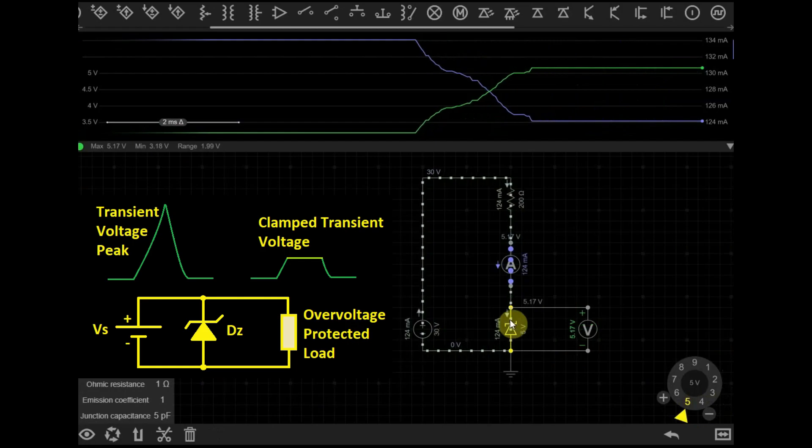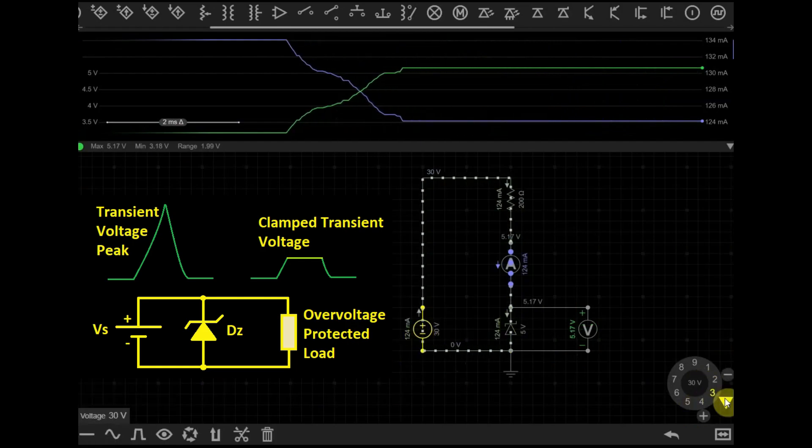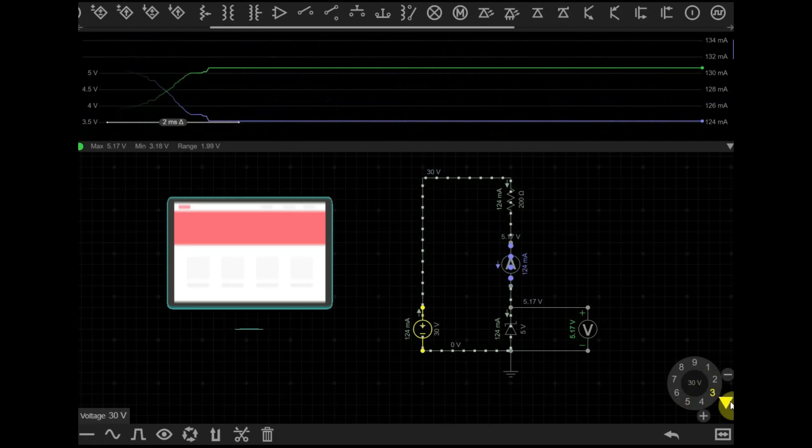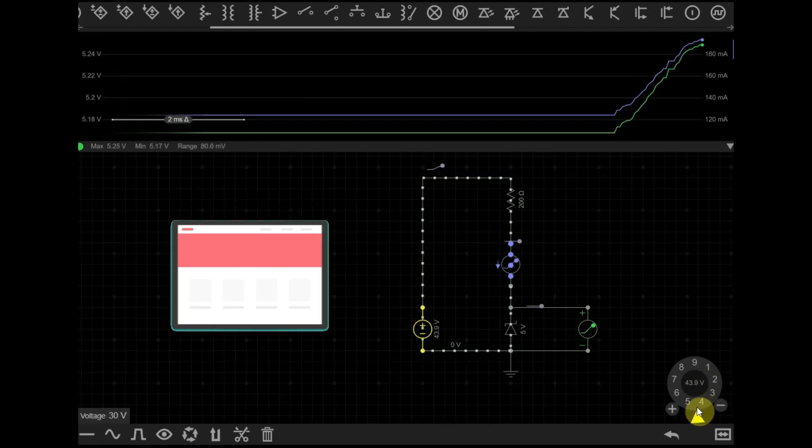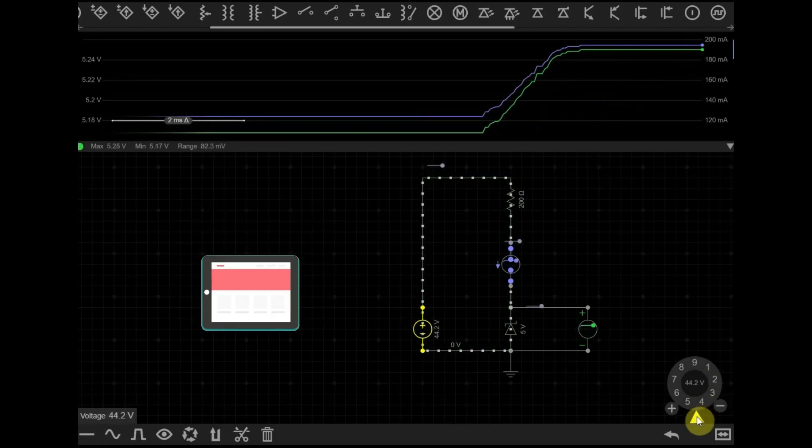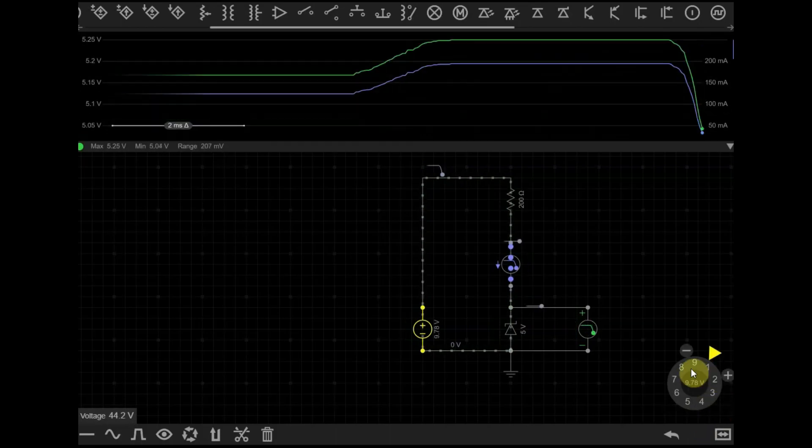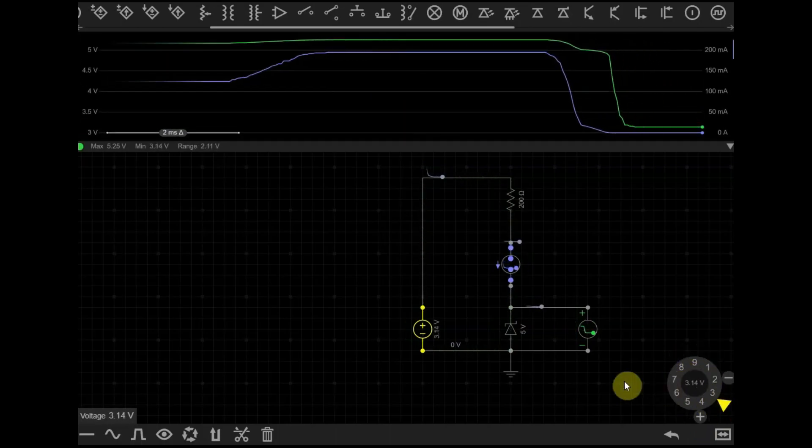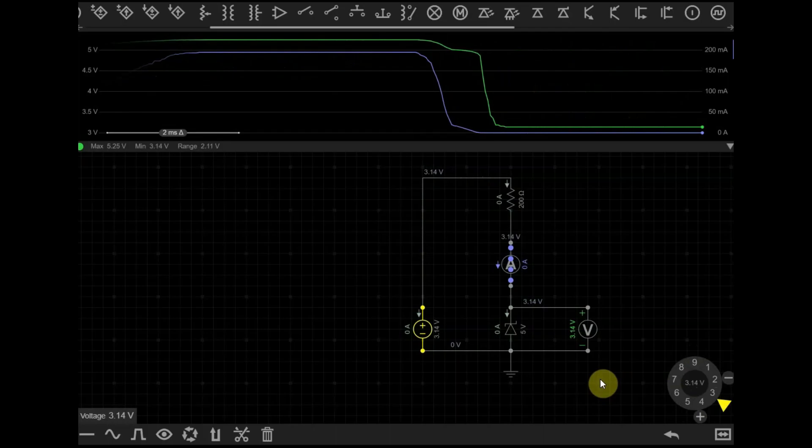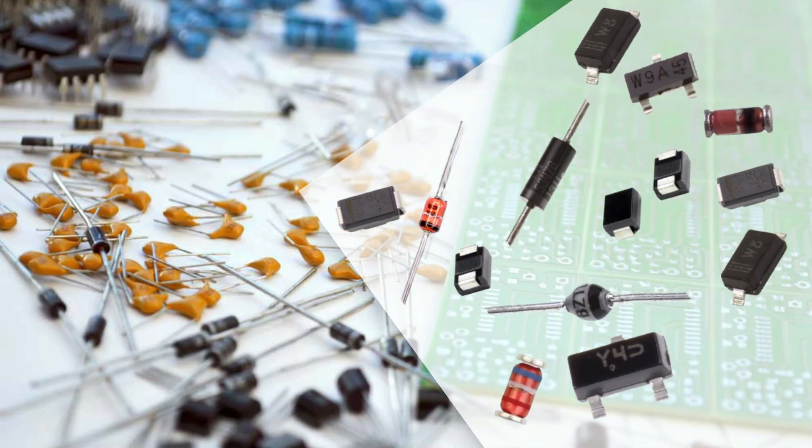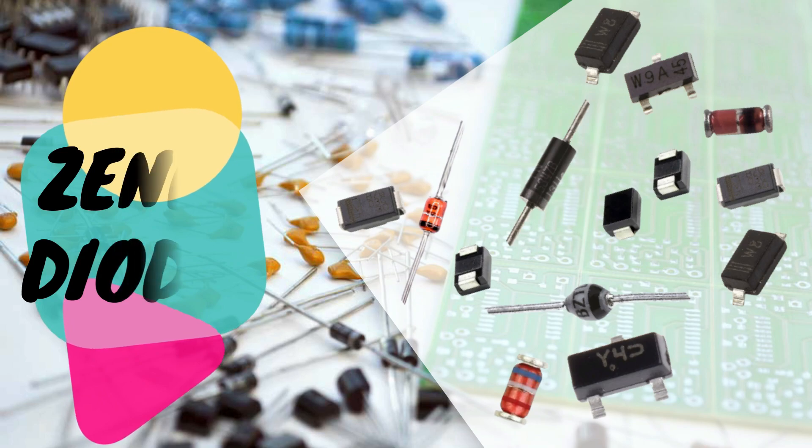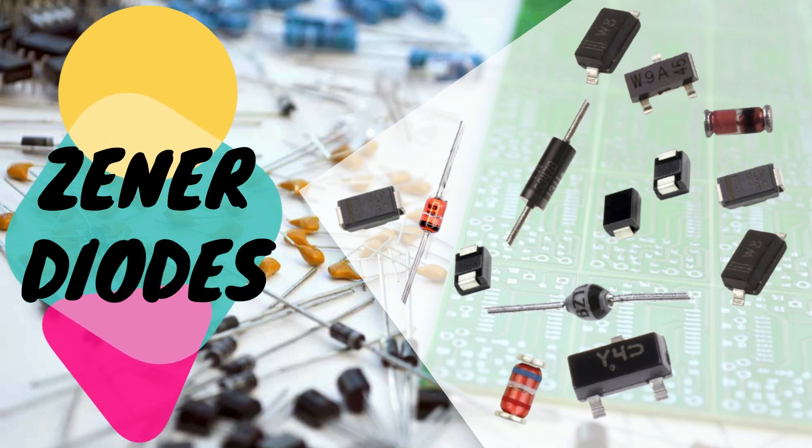Overall Zener diodes have a wide range of applications in electronics and their unique ability to regulate voltage in the reverse bias direction makes them an important component in many electronic circuits. Now you know something more about electronics and Zener diodes. Until next time don't forget to like share and subscribe.